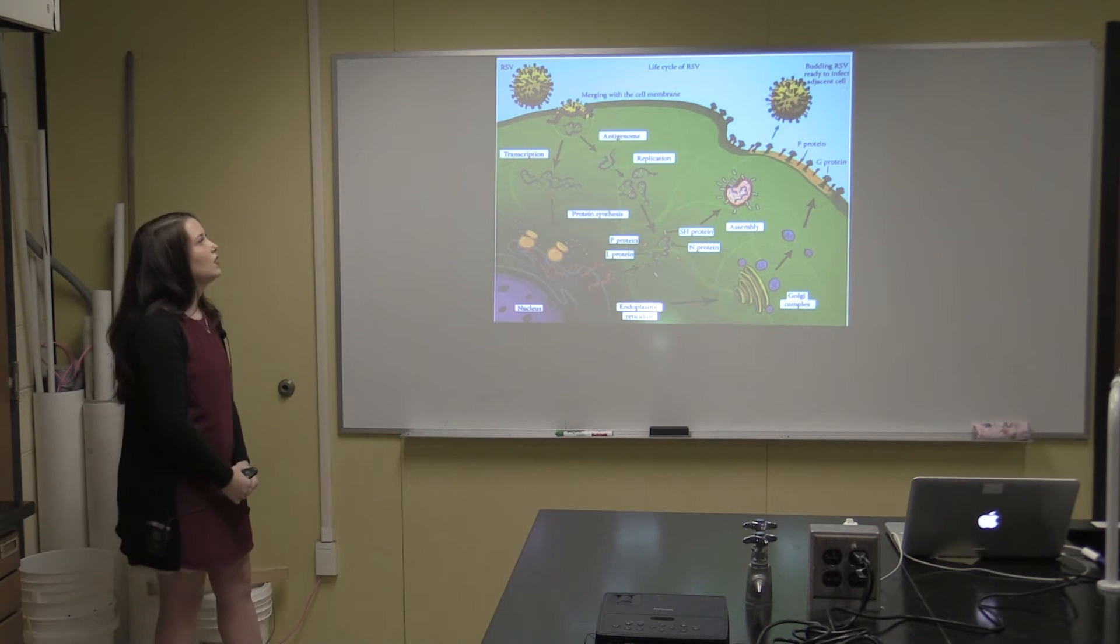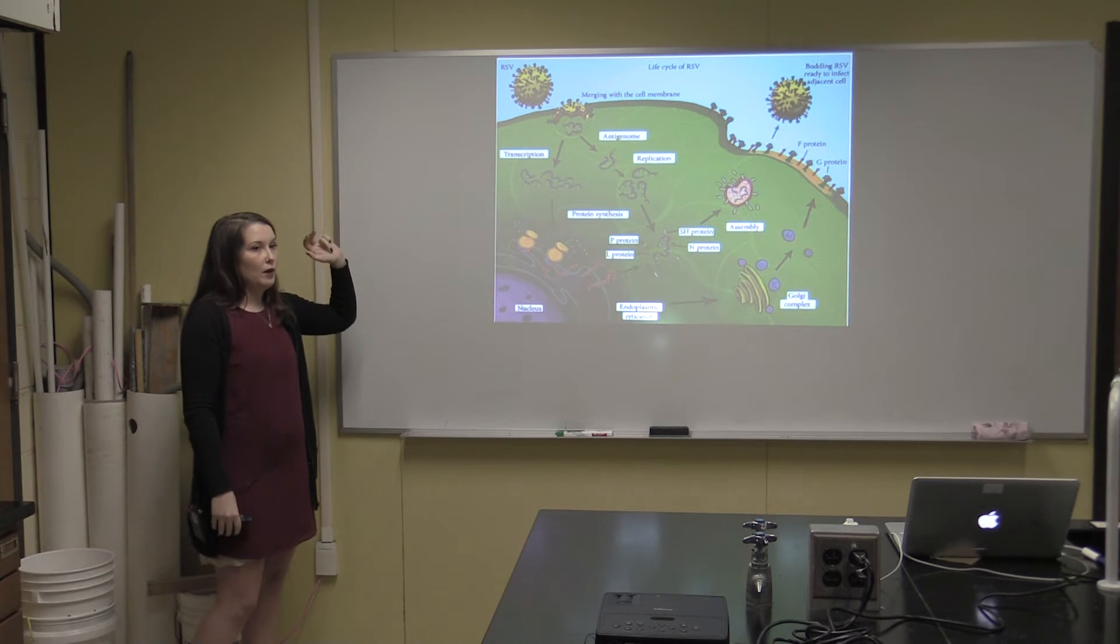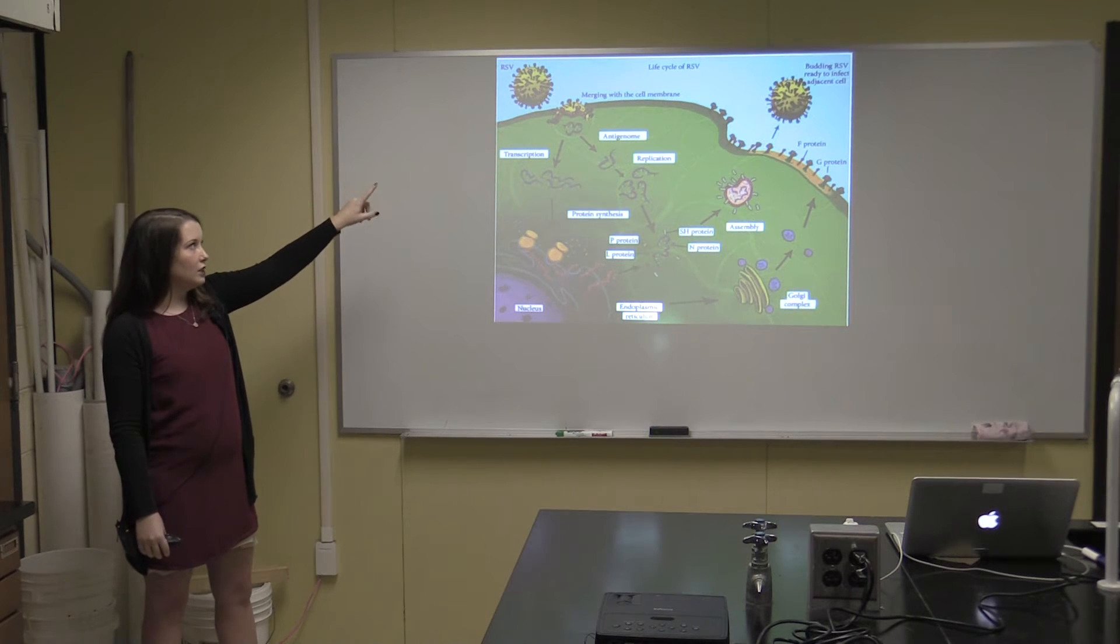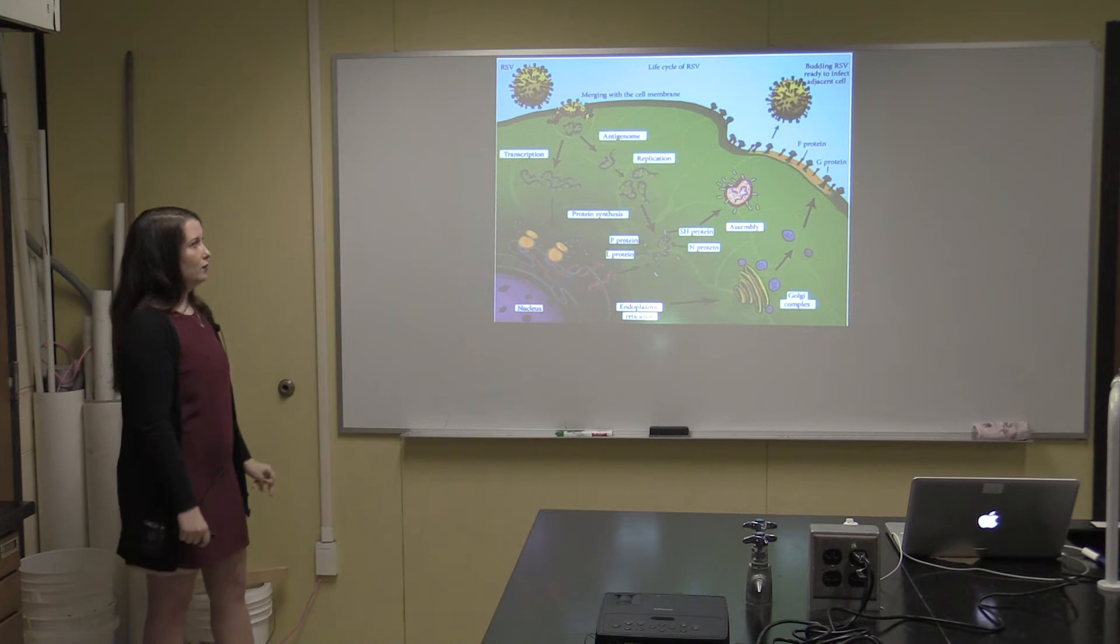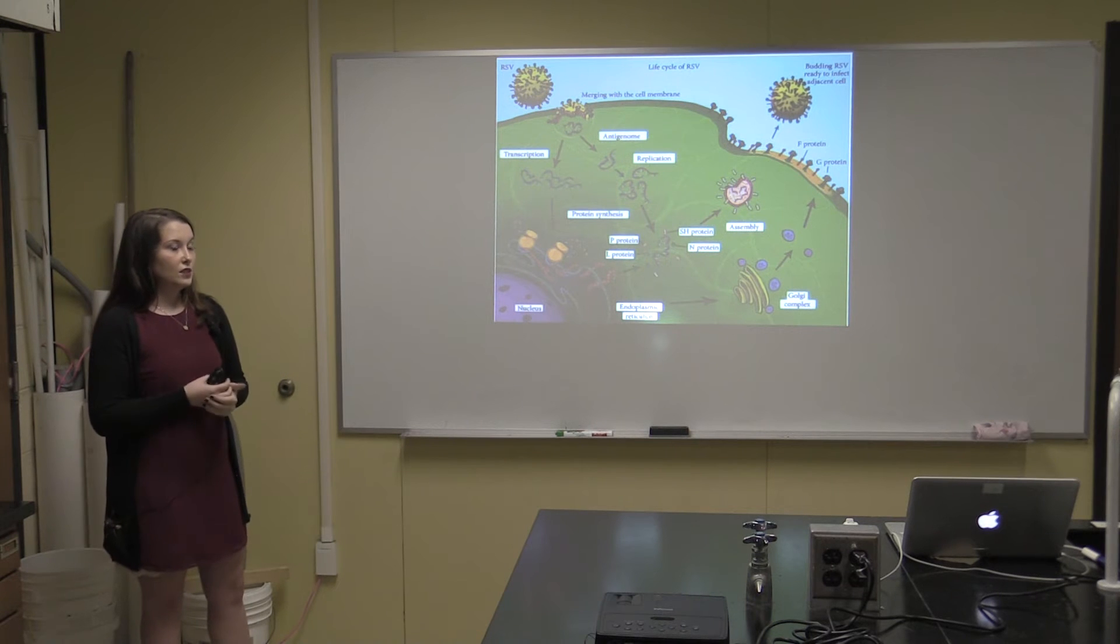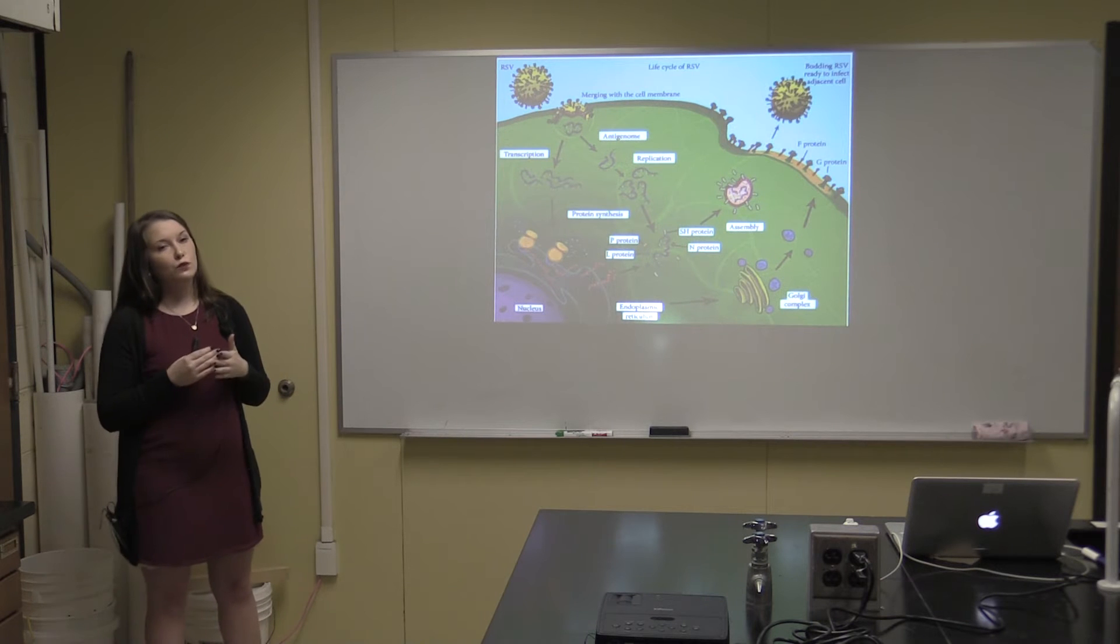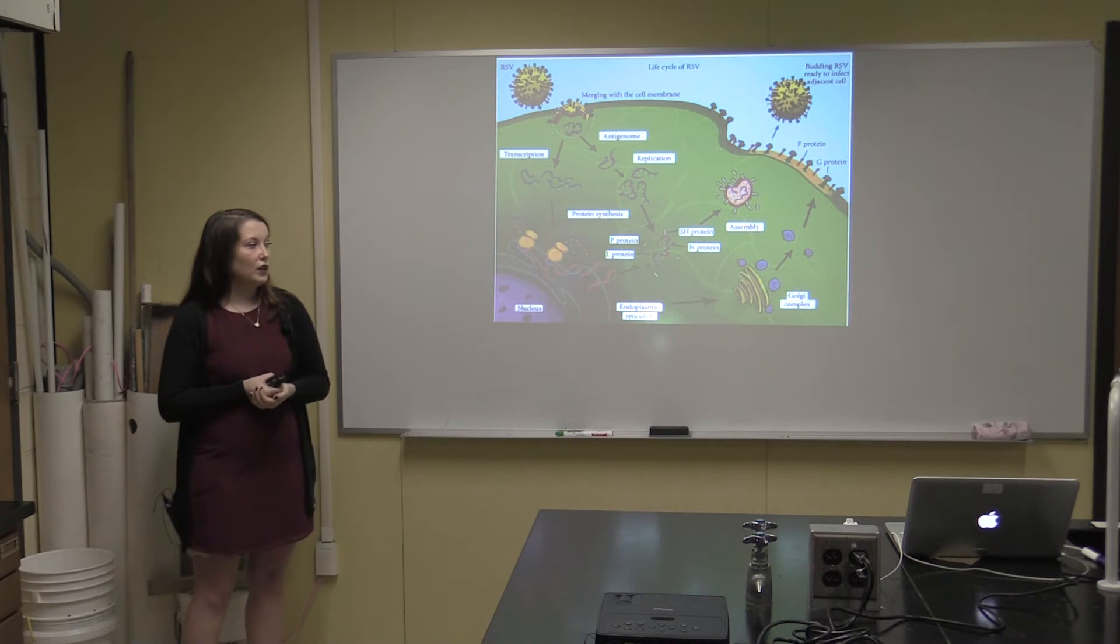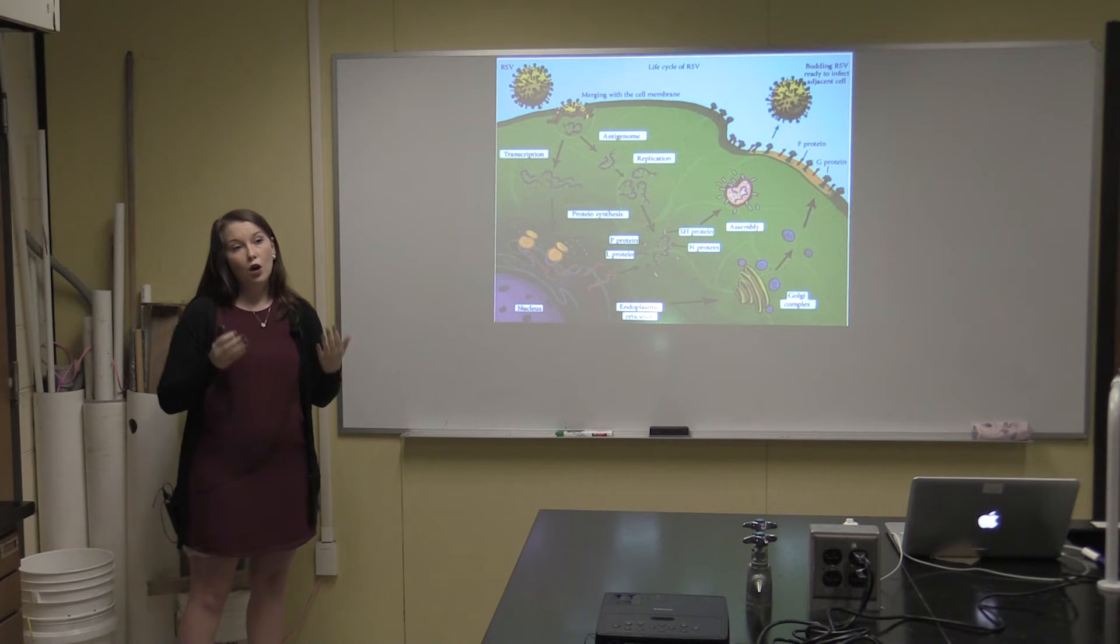This is the life cycle of RSV. As you can see, it's very similar to the schematic for the paramyxoviridae viruses. The RSV virus enters the cell membrane through fusion and attachment with its proteins, and then once it's inside, the RNA packages itself and transcription and replication occur. Once that occurs, it's moved to a different part of the cell where budding occurs and it exits.